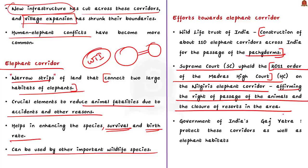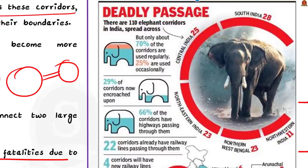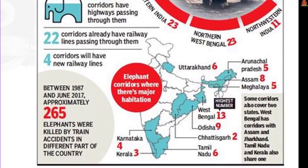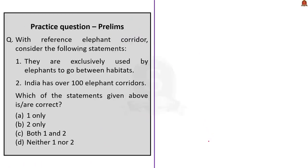The Government of India's Gaj Yatra scheme aims to protect these corridors and elephant habitats. Of the 110 elephant corridors in India, 28 are in South India, 25 in Central India, 23 in Northeastern India, 23 in Northern West Bengal, and 11 in North Western India. Only 70% of corridors are used regularly; 25% are used occasionally. 29% of corridors are encroached, 66% have highways passing through them, and 22 corridors have railways passing through them. Between 1987 and June 2017, approximately 265 elephants were killed by train accidents. West Bengal has the highest number of elephant corridors at 13.